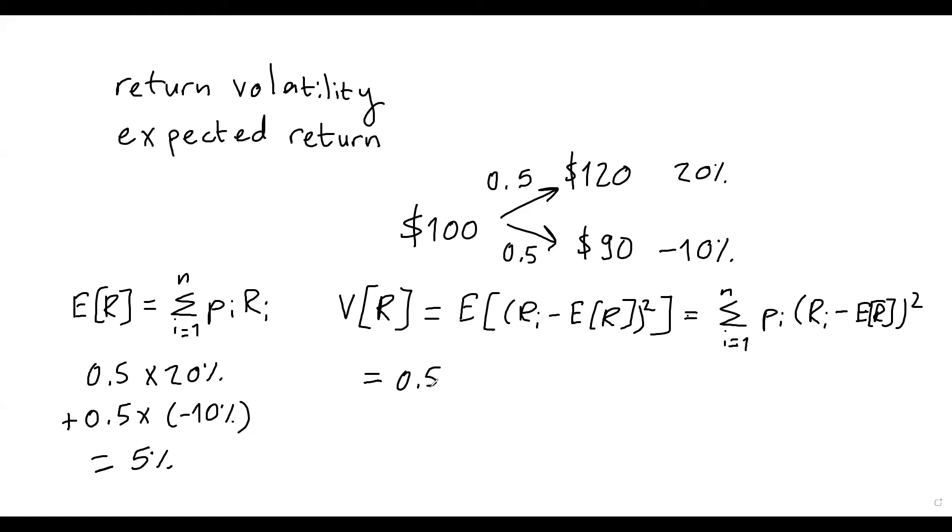So 0.5 times the squared deviation from the mean. So the return observation is 20%. Minus the expected return. So the mean return is 5%. Take the square.